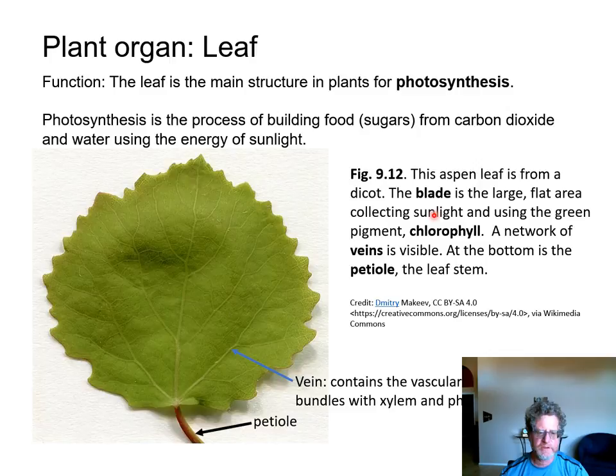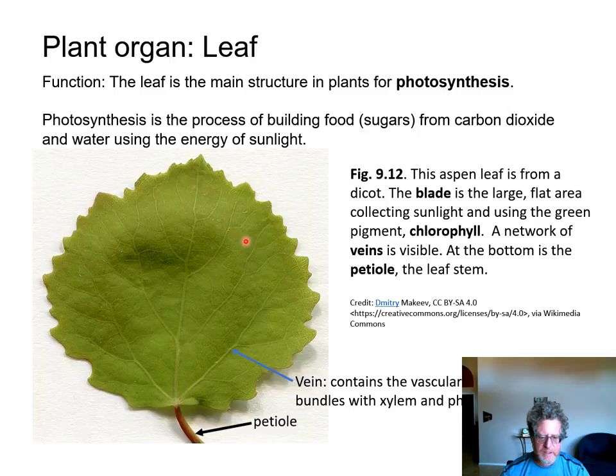Leaves are what we usually think about when we think of a plant. They are flat organs responsible for capturing sunlight and doing photosynthesis. Their green pigment is chlorophyll, which captures sunlight. This dicot leaf is full of veins in a whole network, and there's a leaf stem connecting it to the main stem of the tree called a petiole.